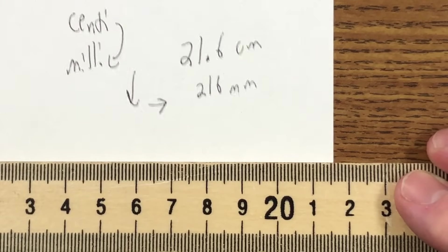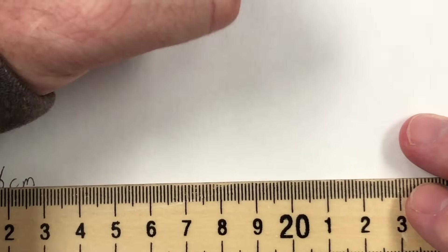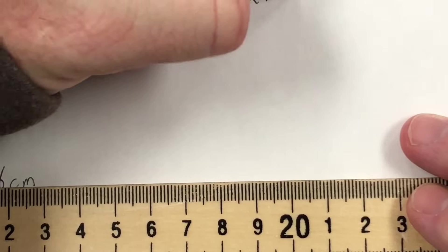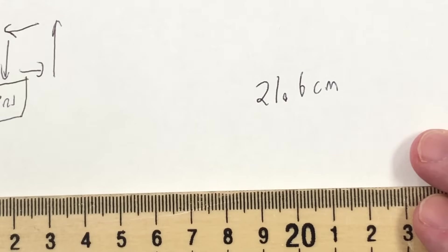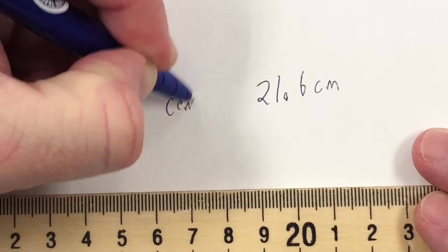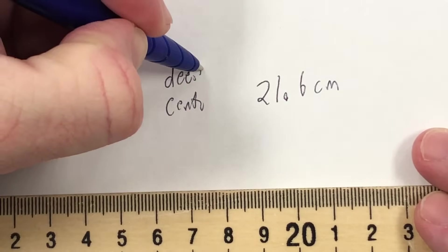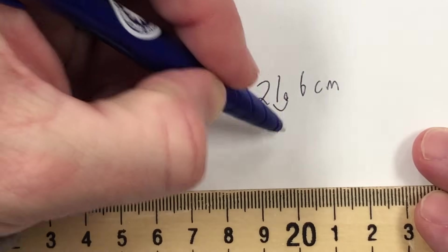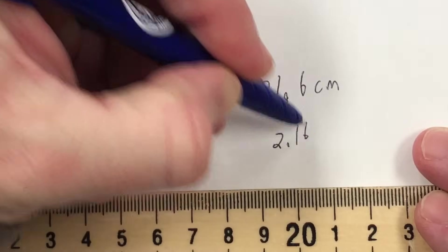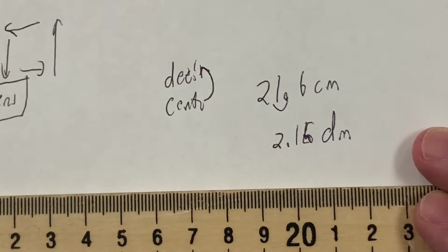Let's go a step further: 21.6 centimeters. If we want to convert centimeters to decimeters, we're going to go up the chart again, so we move the decimal to the left — that's 2.16 decimeters.